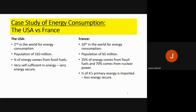To summarize: the USA is second in the world for energy consumption with a population of 310 million, whereas France is 10th with a population of 65 million. In the USA, three quarters of all energy comes from fossil fuels. The key point is that the USA is self-sufficient and very energy secure. France, on the other hand, gets only 25% of its energy from fossil fuels and 70% from nuclear power, but half of its primary energy is imported, making it reliant on other nations and therefore less energy secure overall.